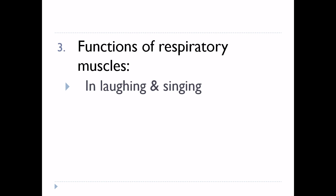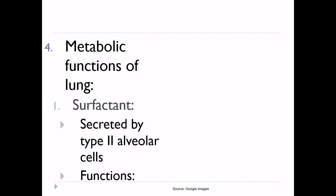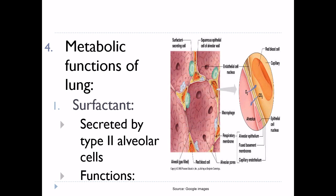Respiratory muscles are also used during laughing and singing. Fourth non-respiratory function of the respiratory system is metabolic function. The first metabolic function is secretion of surfactant, secreted by type 2 alveolar epithelial cells.